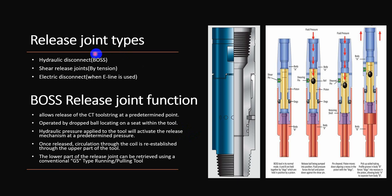Then you have the release sub. If you get stuck with the coiltube and want to release and leave only the BHA — 20 or 30 feet — in the well, you operate this tool by dropping a ball that seats inside and applying surface pressure. The surface pressure breaks the shear pins, and you can pull out of the hole with the coiltube and the upper BHA, leaving the bottom hole assembly with a standard fish neck to be retrieved with a GS tool. Another type is called the BOSS (ball-operated shear sub), which works by the same mechanism.